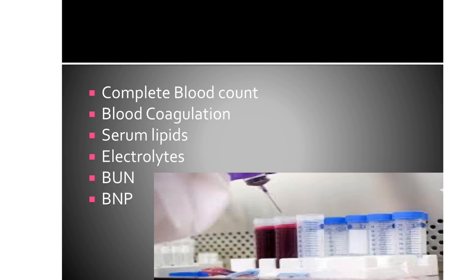In hypokalemia, the ECG also shows appearance of U-wave and ST depression. Hyperkalemia is defined as 5.5 milliequivalents per liter or above. It may cause asystole and ventricular dysrhythmias. The ECG changes in hyperkalemia include tall peaked T-waves, widened QRS complex, prolonged PR intervals, and flat P-waves.